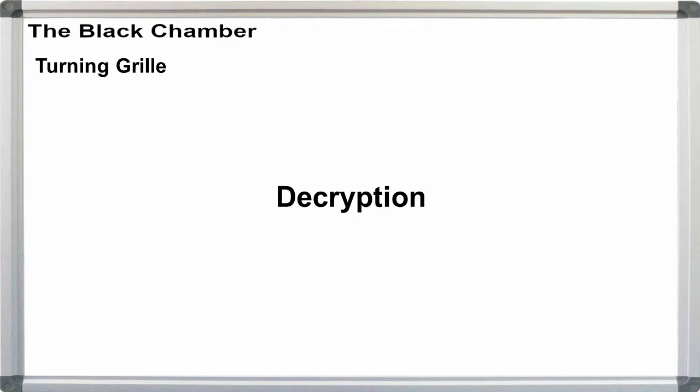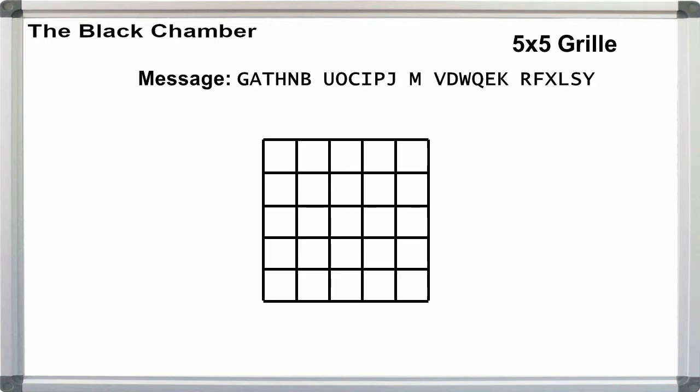Decryption. Decryption with the rotating grill is the same as for encryption. If the cipher length is a multiple of 25, then create a 5x5 grid. Next, fill the grid in rows from top left to bottom right. Place the grill over the grid in the starting orientation. If you don't know what the starting orientation is, no problem. It will be pretty obvious as you go along.